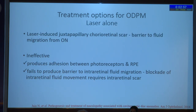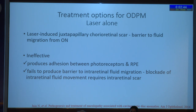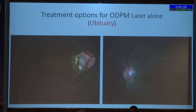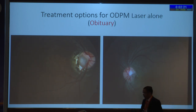The first treatment option is laser alone, which basically induces a juxtapapillary chorioretinal scar, acting as a barrier for fluid migrating from the optic nerve into the macular area. However, it is quite ineffective. Cases done with laser alone look okay but the macula is totally degenerated — the outcome is bad. ODPT laser alone should be written off as an obituary, like smallpox.